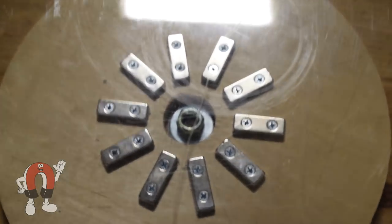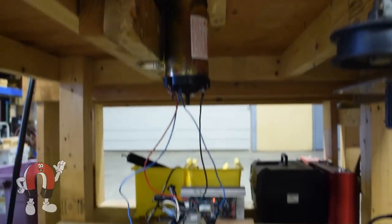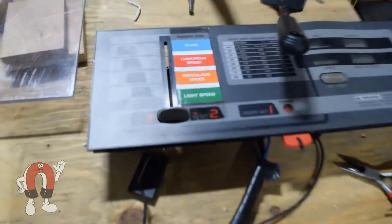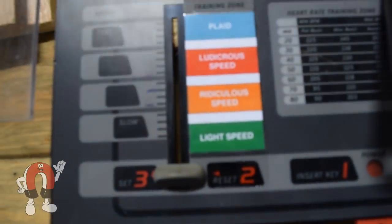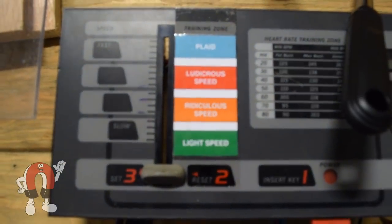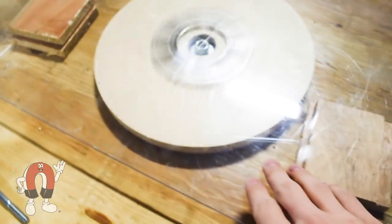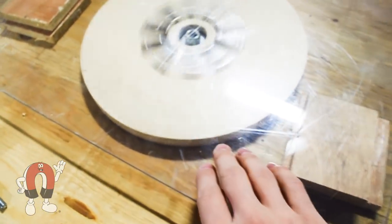Okay, so here's the setup. Underneath we have a treadmill motor, took it out of an old treadmill, and over here we have the controls for the treadmill.